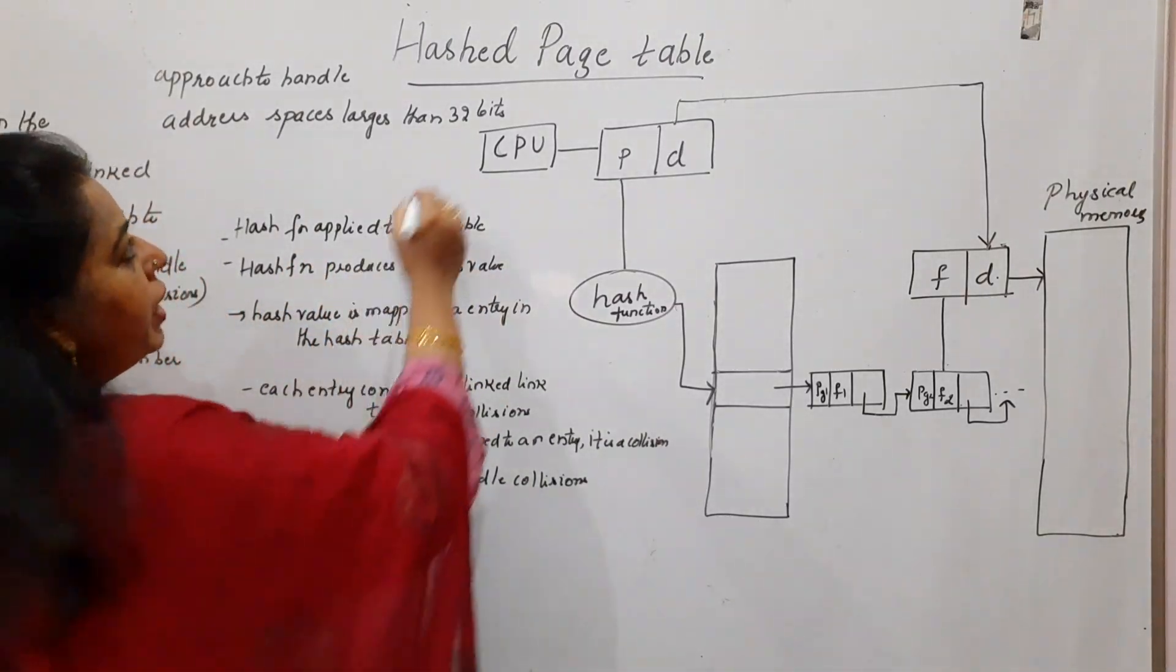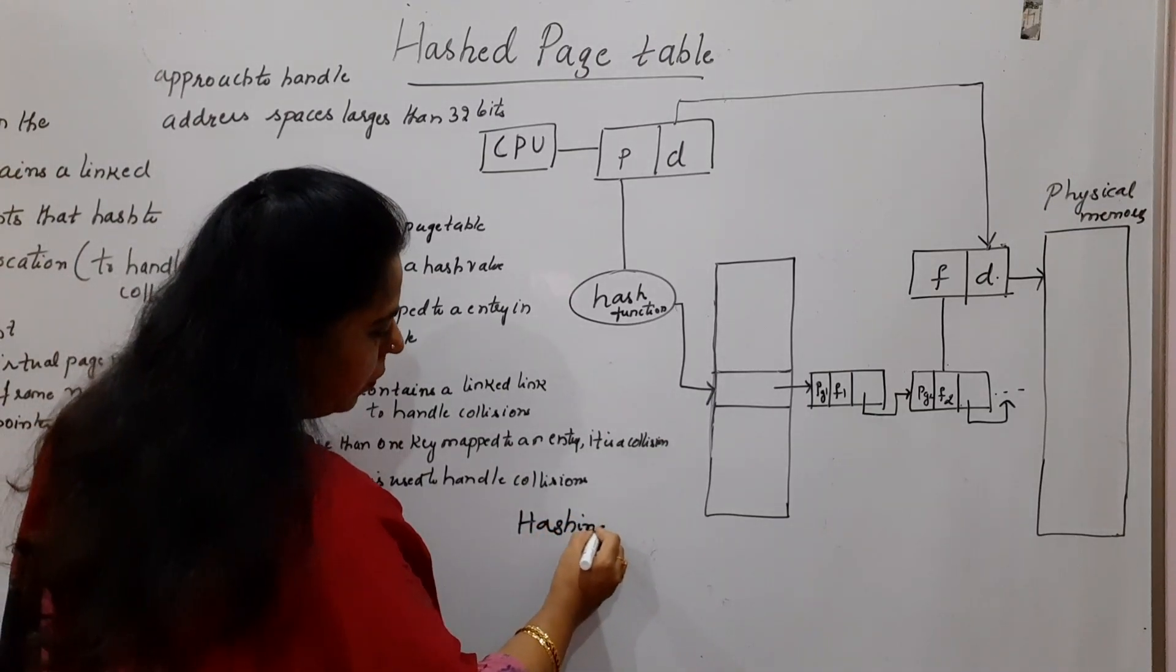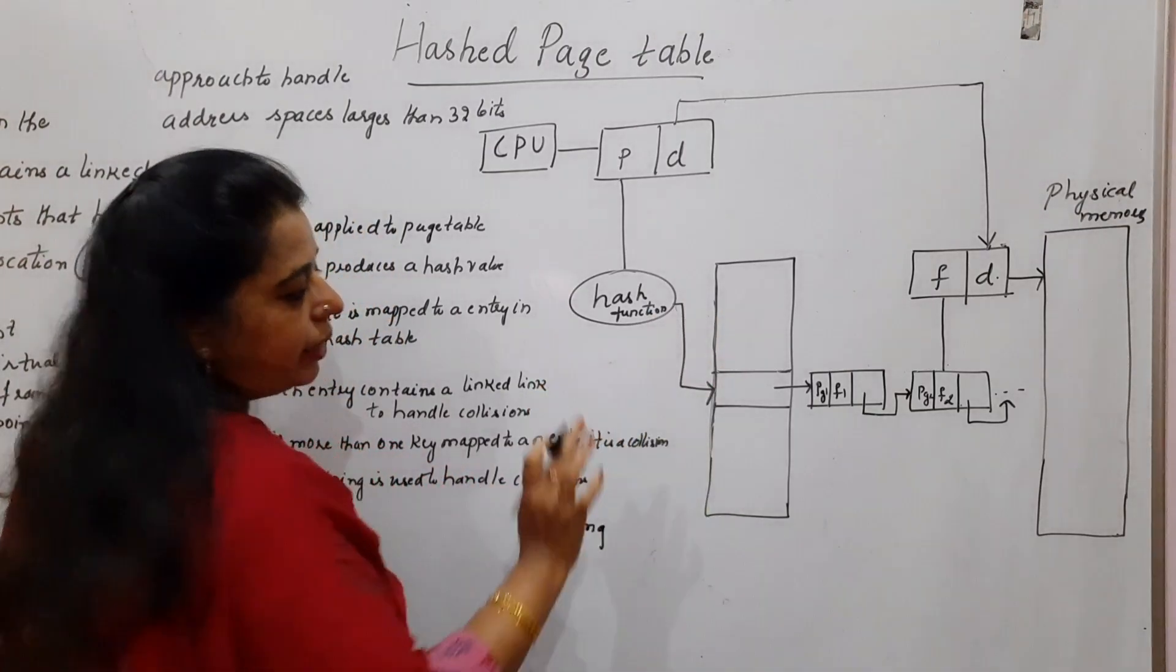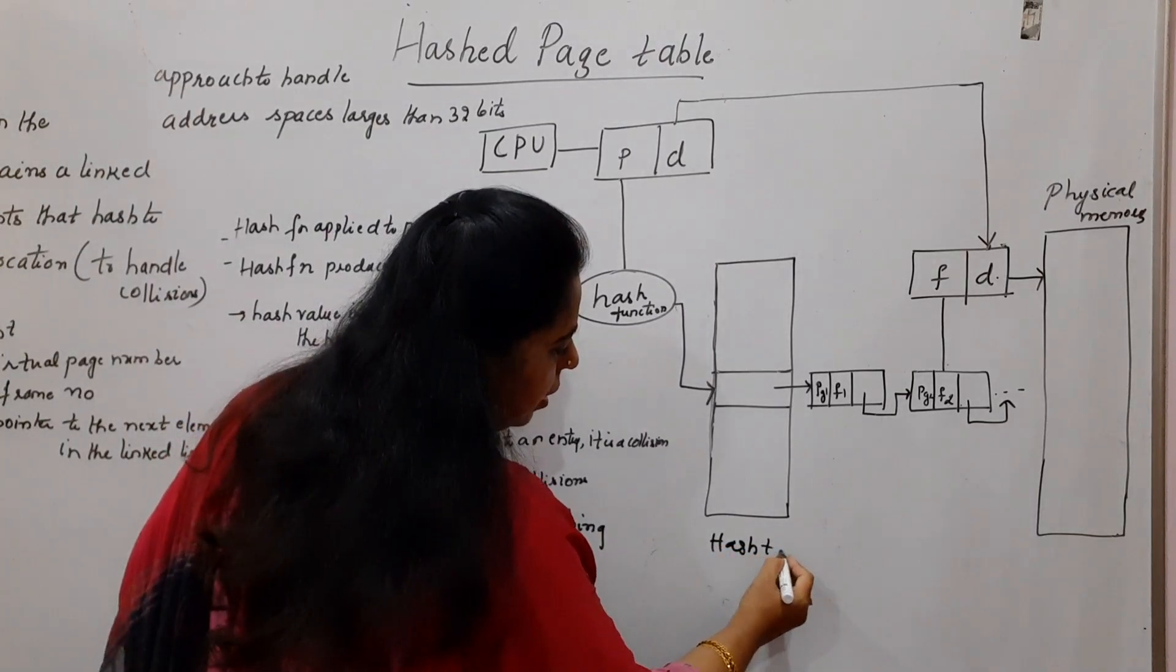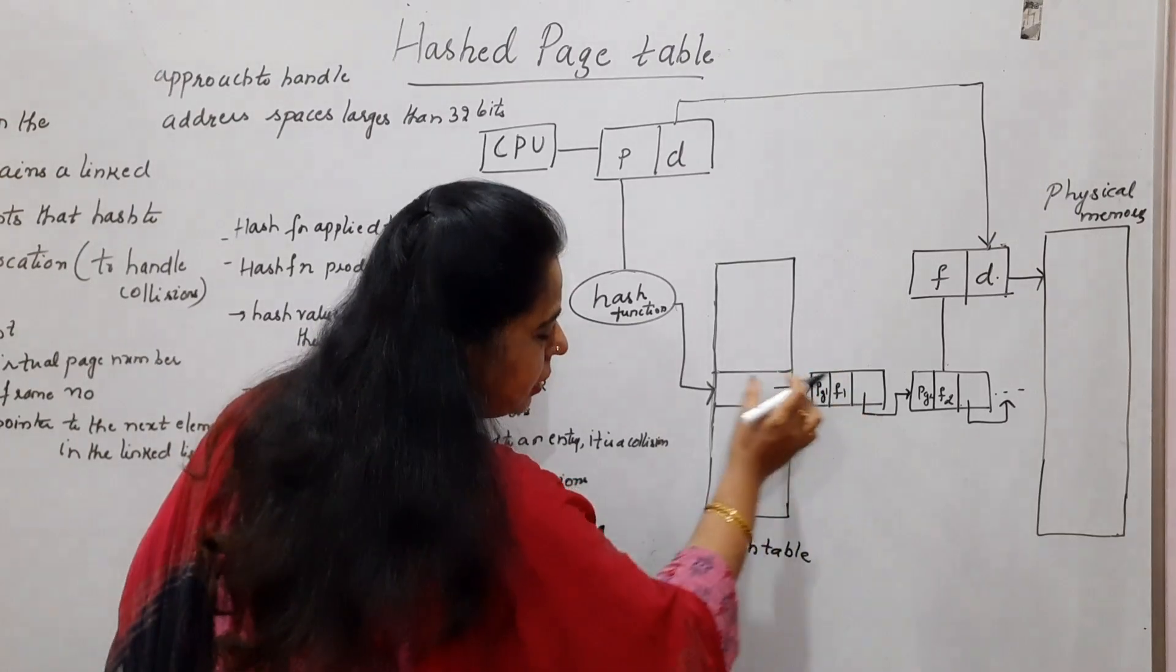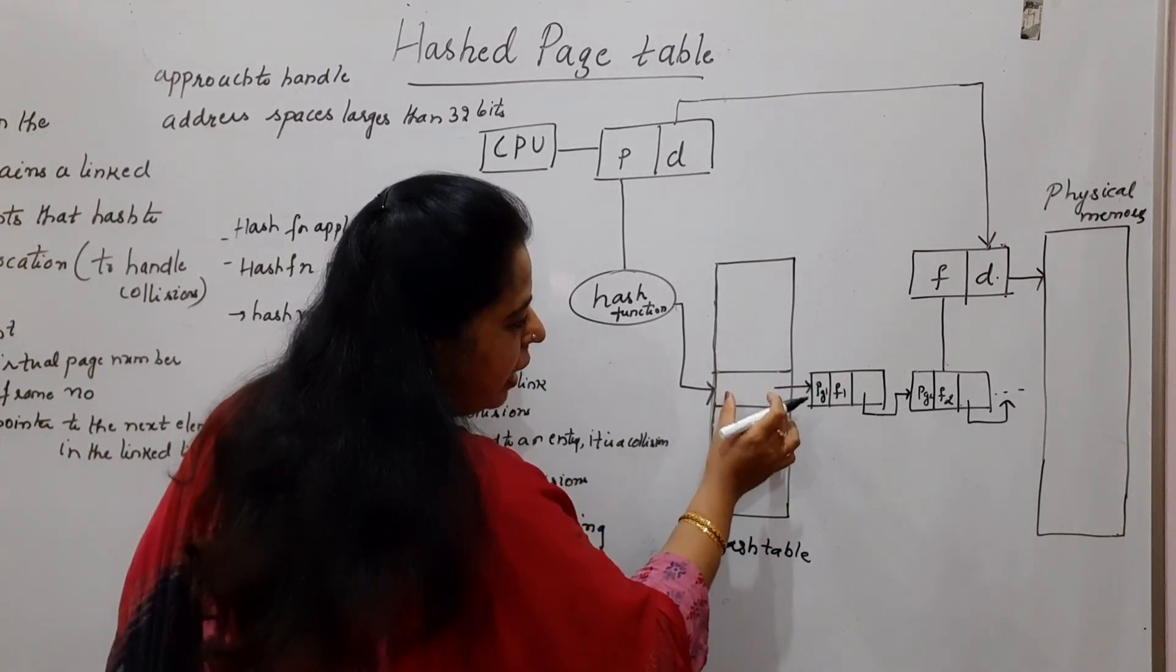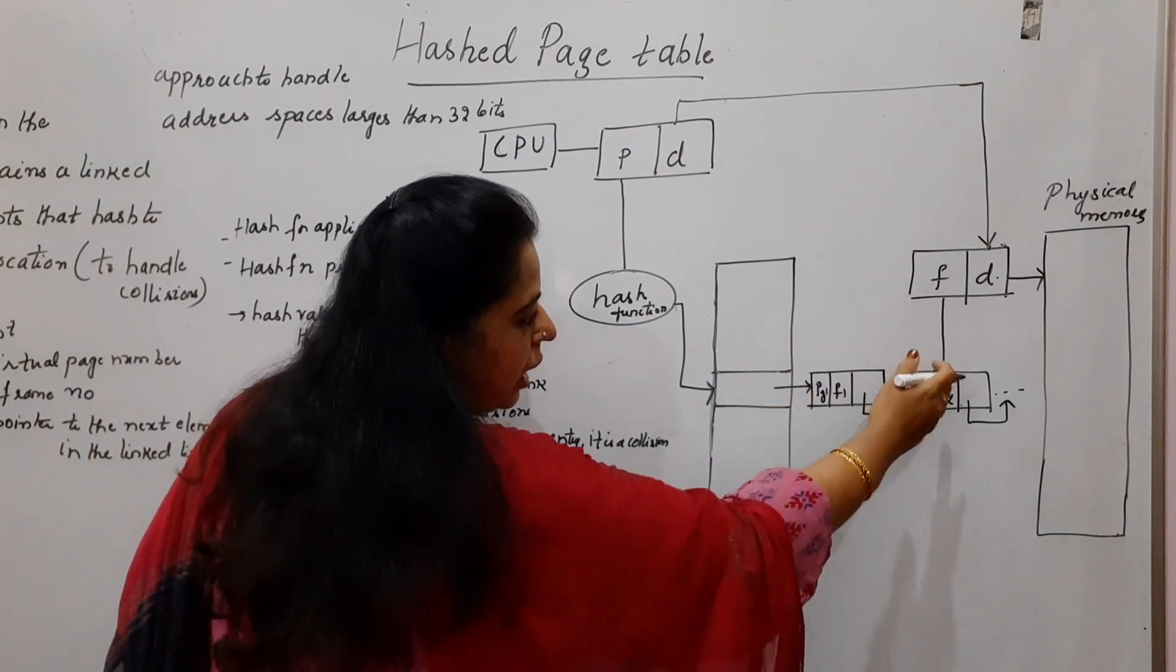Now here we are using a hashing technique in order to search a particular element in the hash table. Now what is hash table? Hash table is one which is going to store information about the page numbers and the frame numbers. But not one single entry will have one page number and the corresponding frame number. Rather, it is a chain of entries.